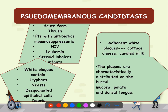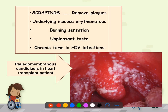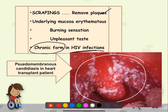Pseudomembranous candidiasis has two forms: acute and chronic. The acute form, also called thrush, is seen in patients using antibiotics, those with HIV or leukemia, steroid inhaler users, and infants. It presents as white plaques that appear like cottage cheese or curdled milk. These plaques contain hyphae, yeast, desquamated epithelial cells, and debris, distributed over the buccal mucosa, palate, and dorsum of the tongue. The plaques can be scraped off, leaving a burning sensation. The chronic form is mostly seen in HIV infection.